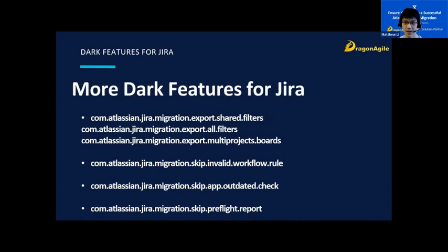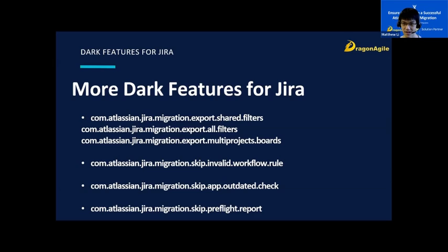Here are some more dark features for Jira. Using all three keys, cross-project boards are able to be migrated, but they will not be assigned to a project once in the cloud, and all three must be activated for it to work. For the second one, incompatible workflow rules will not be migrated — they'll either need to be fixed manually, or you can use this dark feature to skip the workflow rules so they will not be migrated. The app outdated preflight check should only be bypassed during the testing phase, and this bypasses the check that forces you to upgrade the plugin. For the last one, skipping of the pre- and post-migration reports should only be done after at least one run, and this should only be used if there is a strict time constraint, as generating the reports could lead to delays.